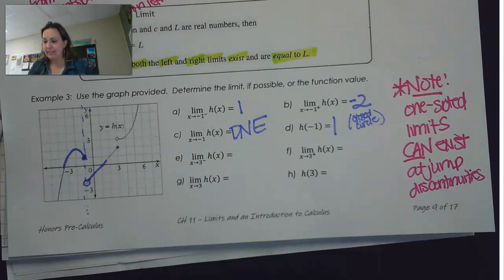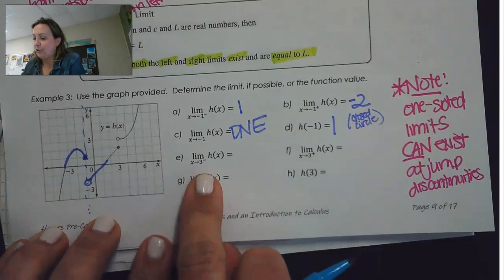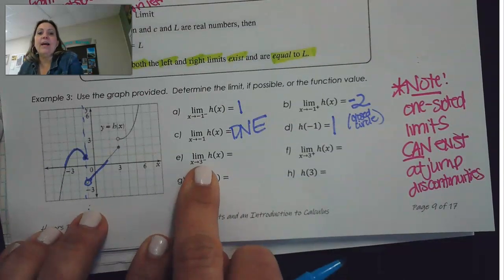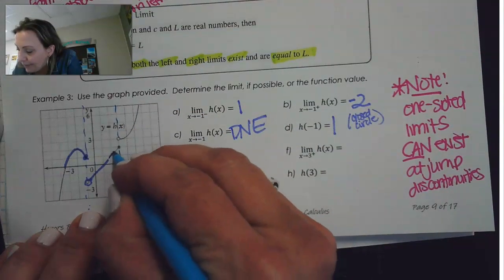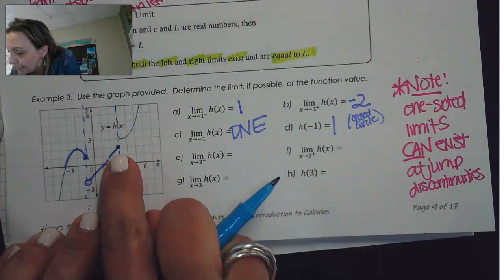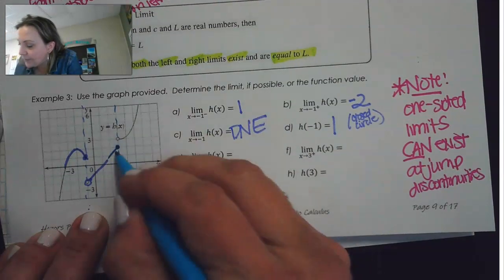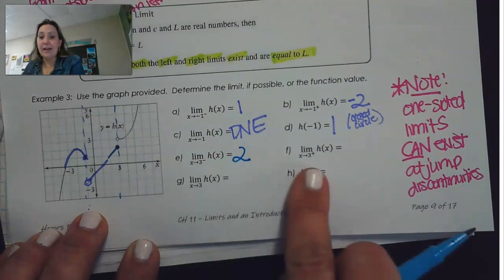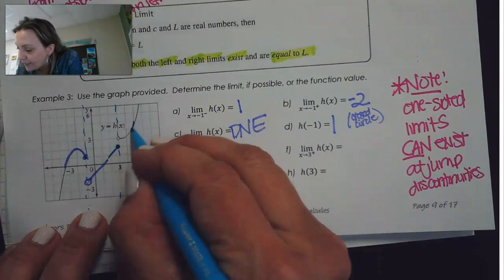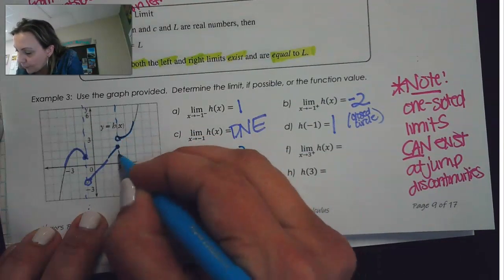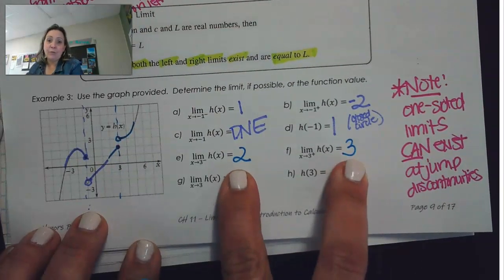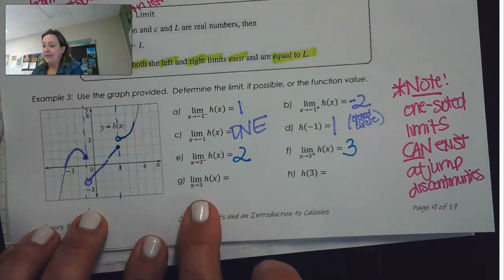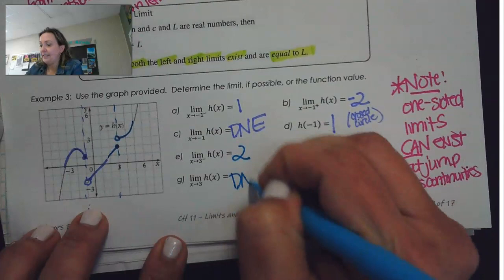Let's look at x approaches 3. We're approaching 3 from the left. Here's where x equals 3. From the left, we can see it's going towards this value at 2. Letter F is asking us to approach 3 from the right. That looks like it's going to 3. Notice that these one-sided limits don't match, which means the limit of H of x as x approaches 3 does not exist.